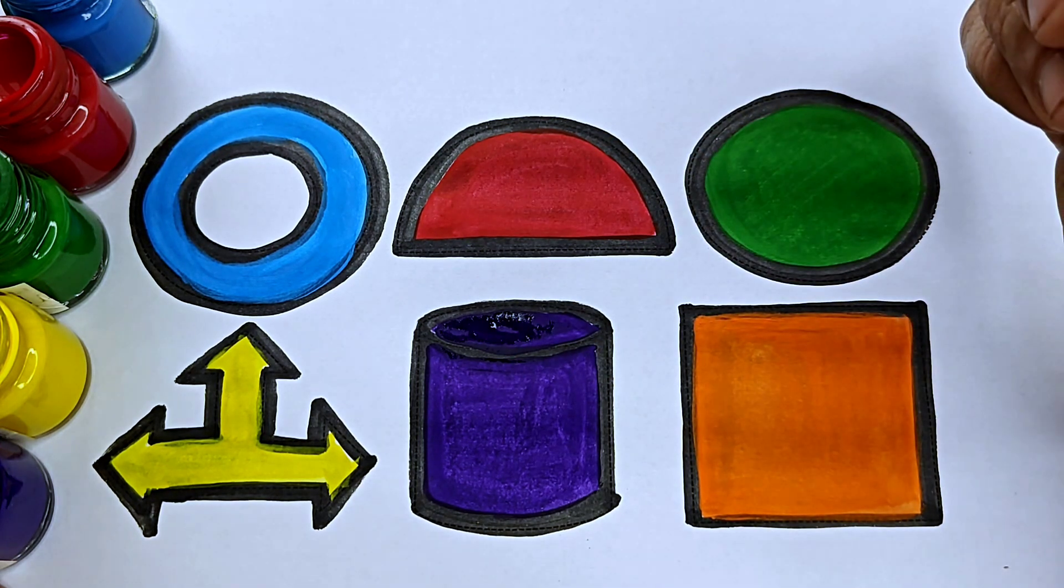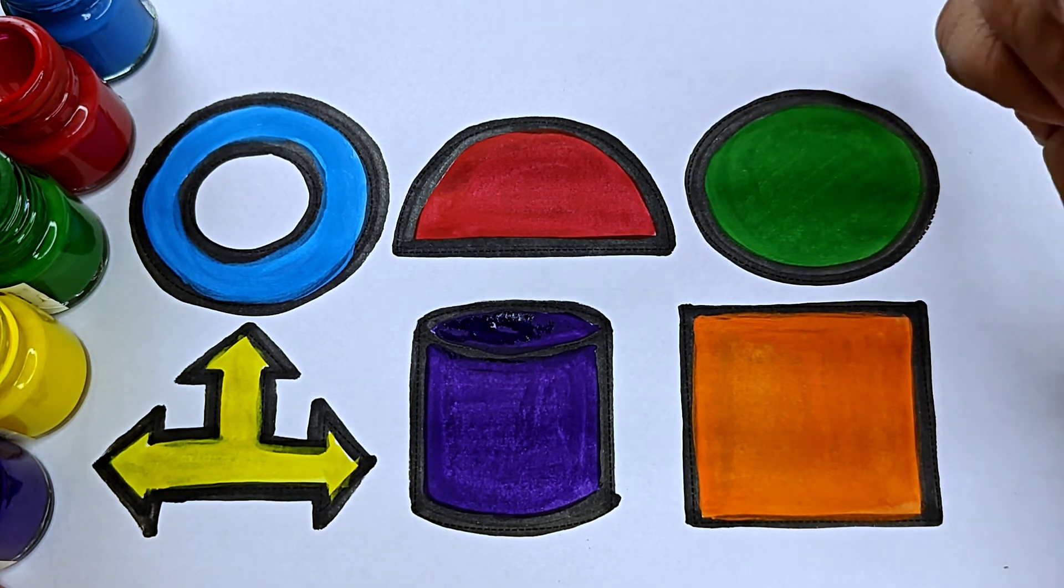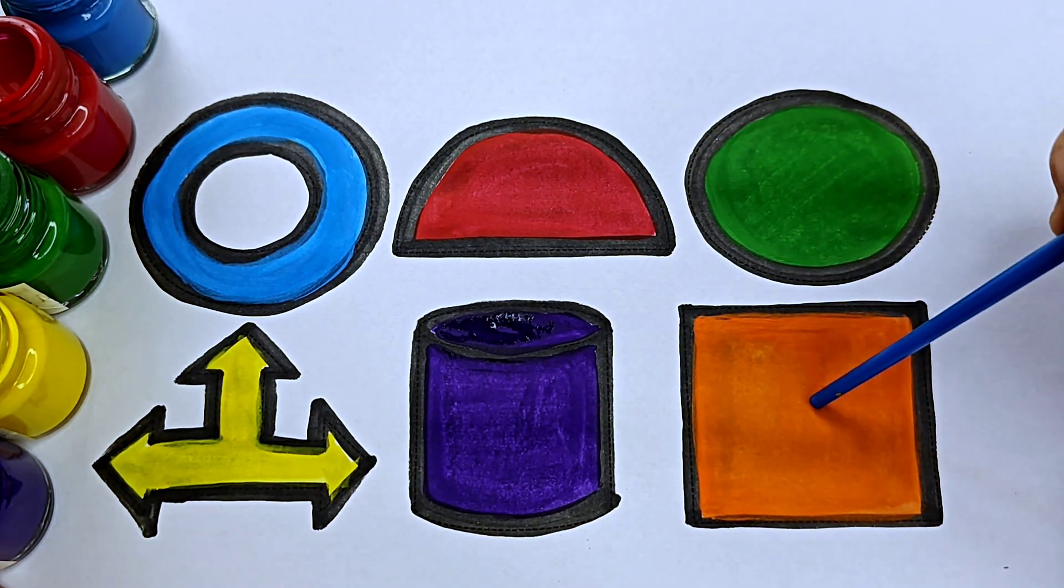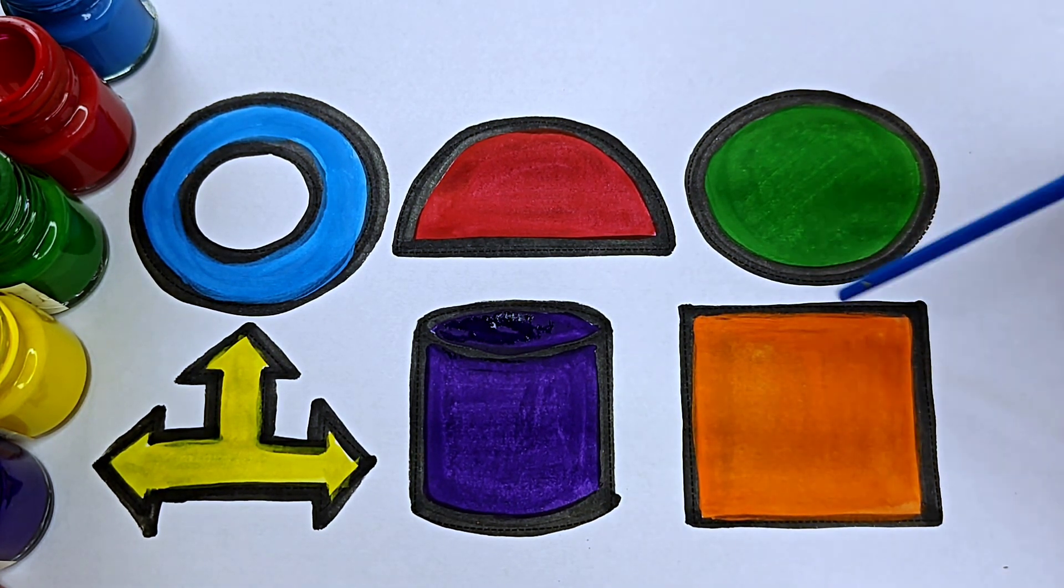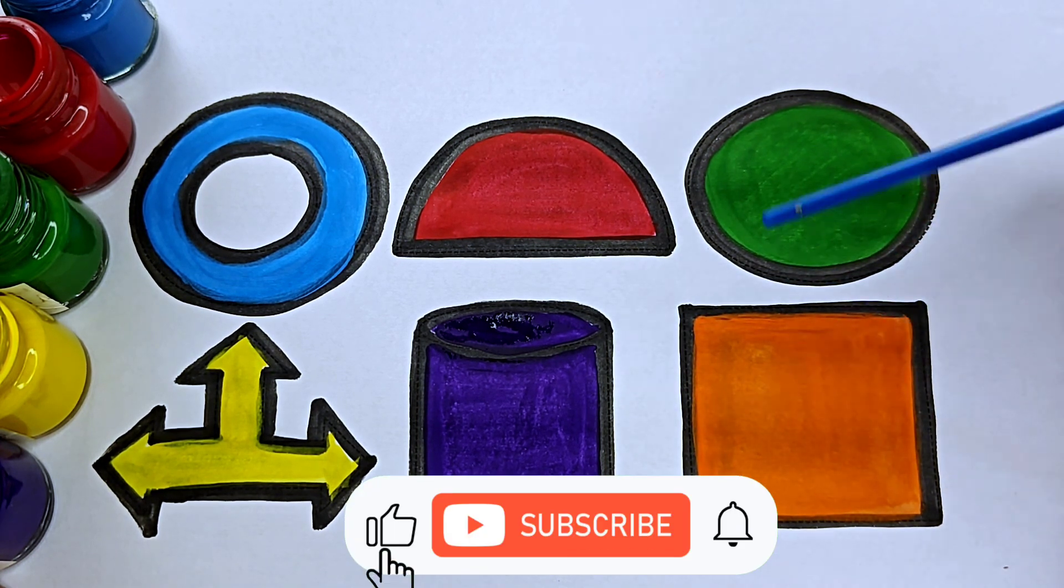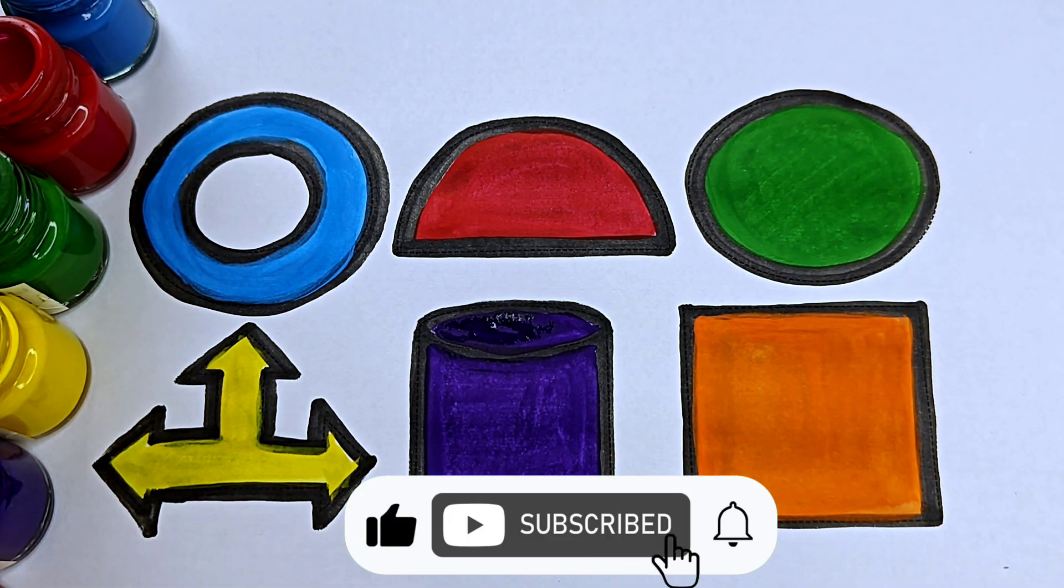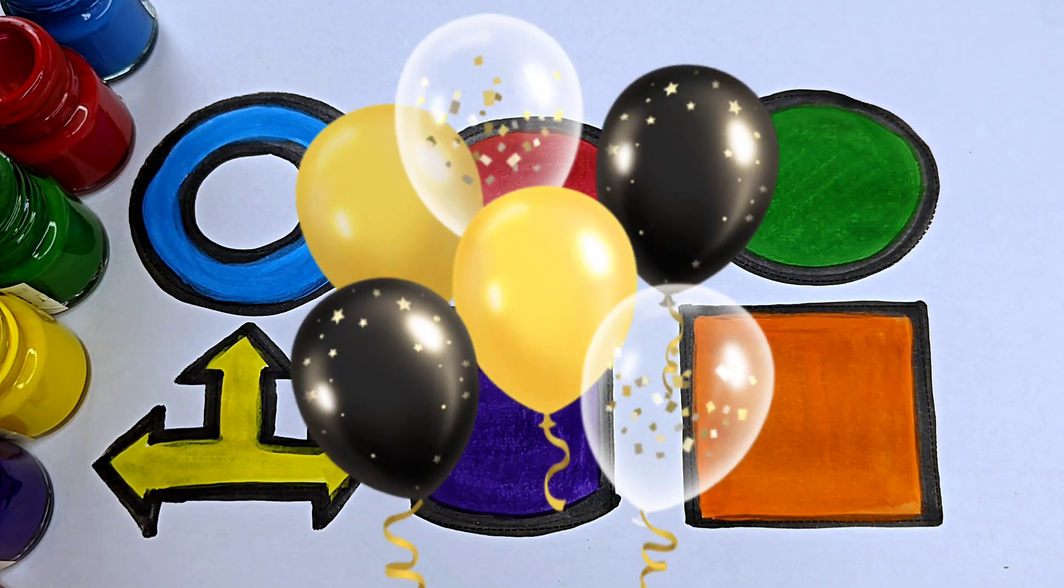This is cylinder, C-Y-L-I-N-D-E-R cylinder. It is a 3D shape. This is square, S-Q-U-A-R-E square. It has 4 sides, 1, 2, 3, 4, and all sides are equal. Thanks for watching this video. Don't forget to like and subscribe and keep learning. Bye-bye.